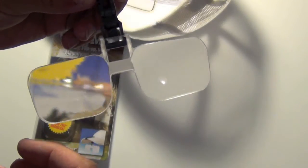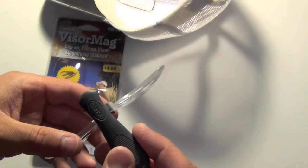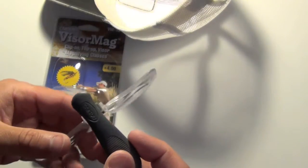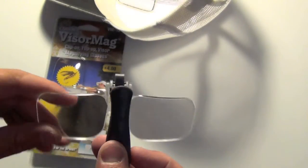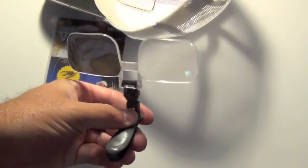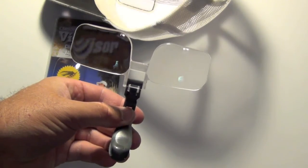They come in three different magnifications: a 3 power, 4 power, 5 power. And that is the visor mags.